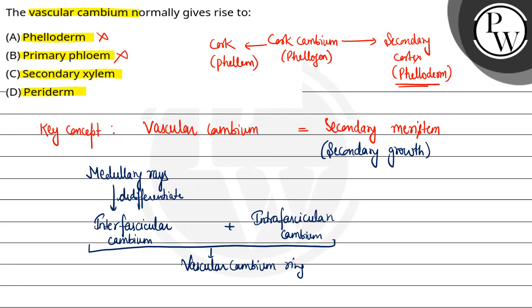Third one is the secondary xylem. Ye option hamara correct hai kyunki vascular cambium ek taraf secondary xylem banata hai aur dusri taraf secondary phloem jo ki secondary growth mein role play karte hain.